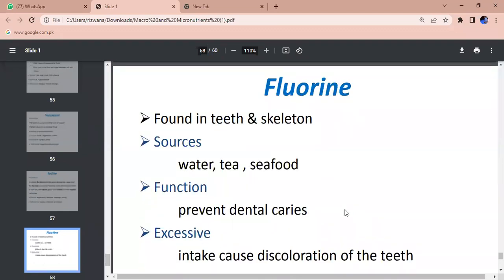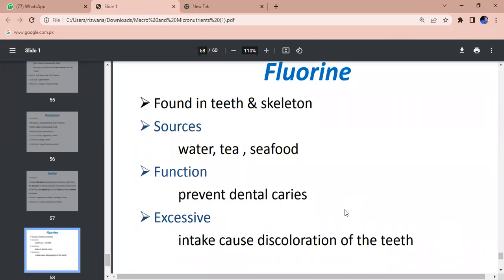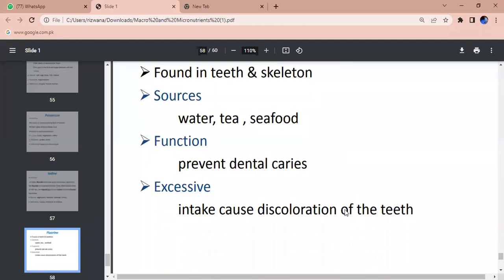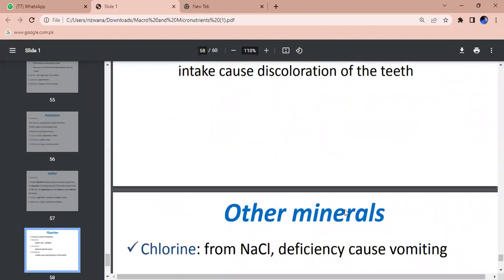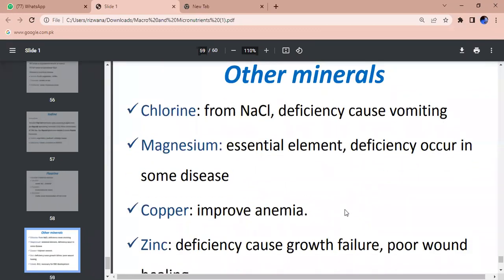Fluorine - found in teeth and skeleton. Sources - water, tea, seafood. Function - prevents dental caries. Excessive intake causes discoloration of the teeth.